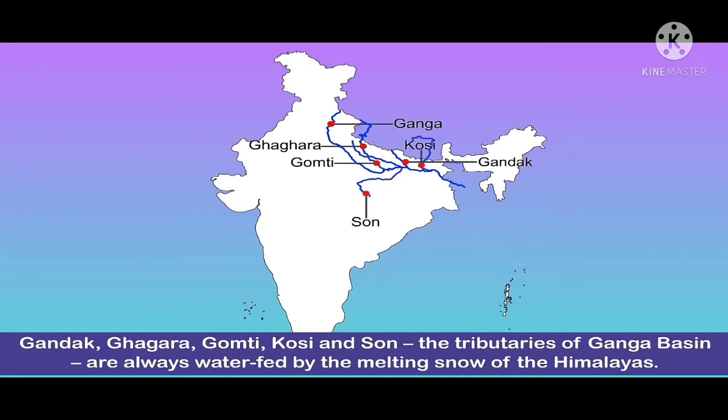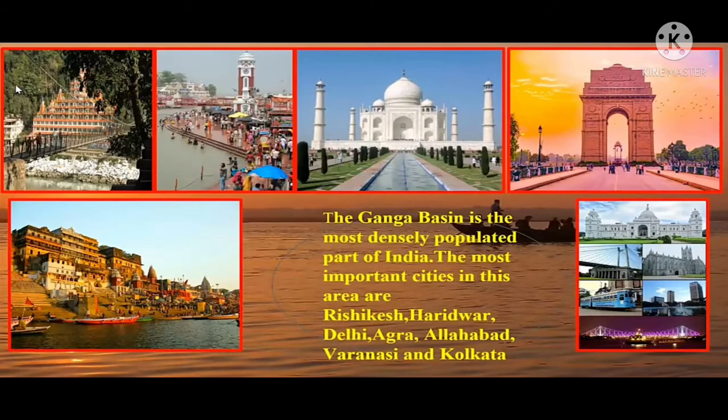Finally, the river Ganga falls into the Bay of Bengal. The Ganga basin is the most densely populated part of India. The most important cities in this area are Rishikesh, Haridwar, Delhi, Agra, Prayagraj (which was earlier known as Allahabad), Varanasi and Kolkata.